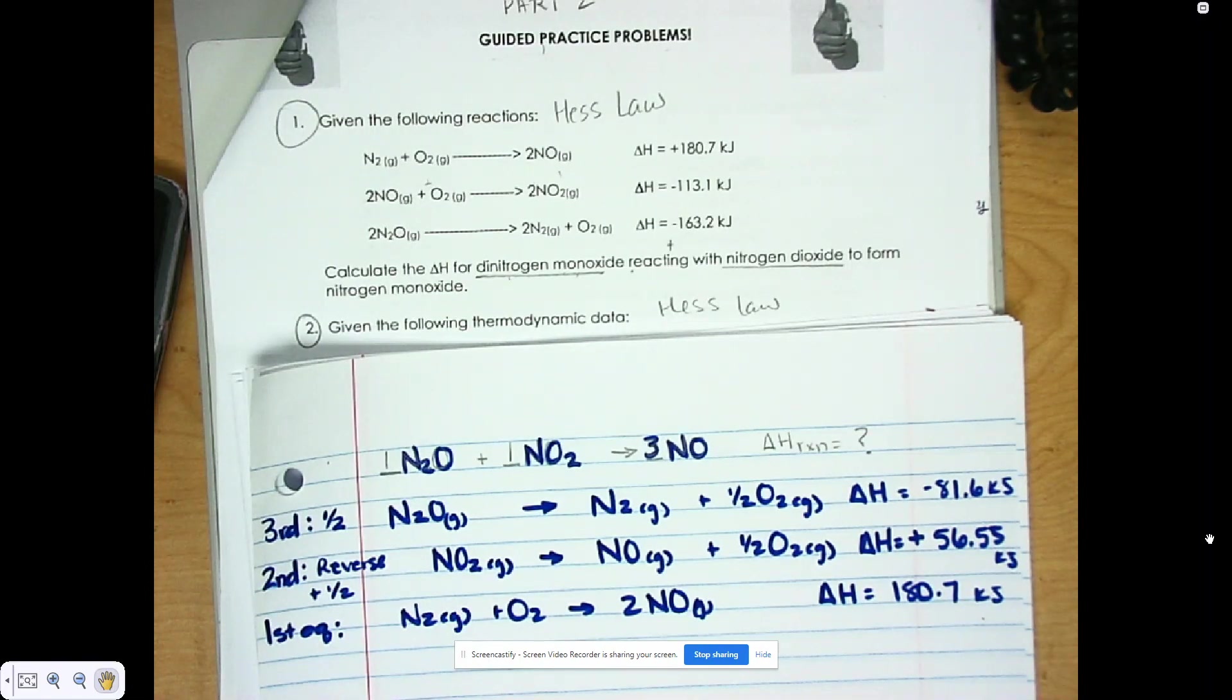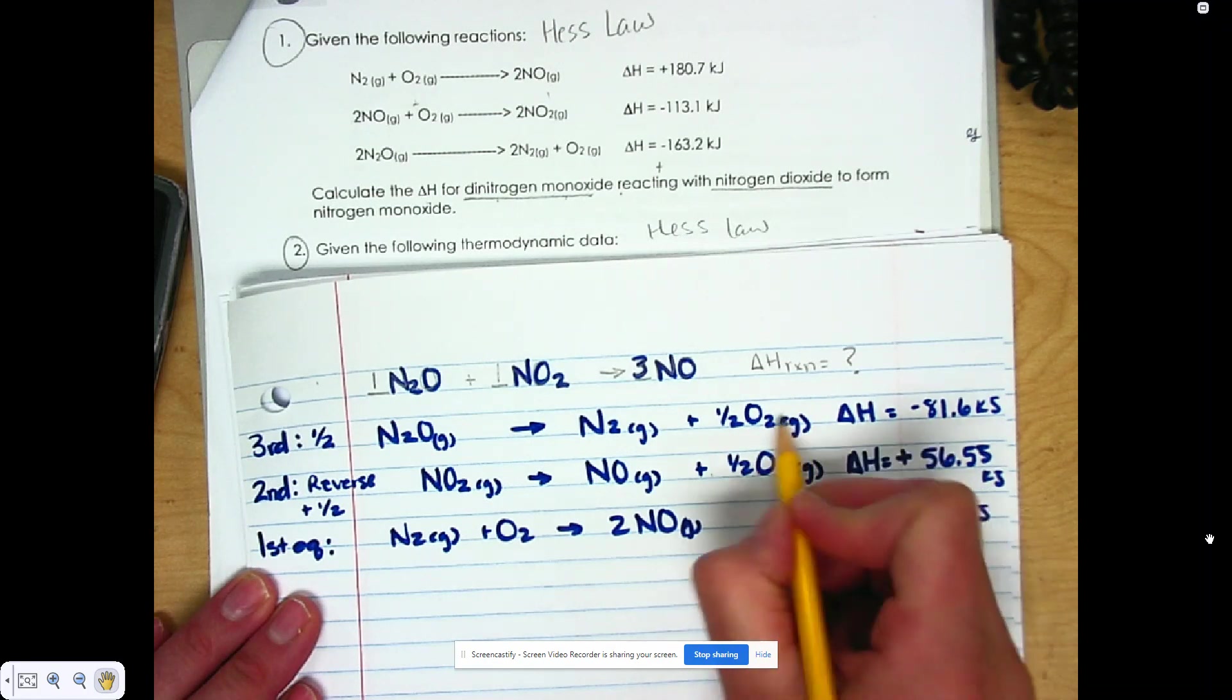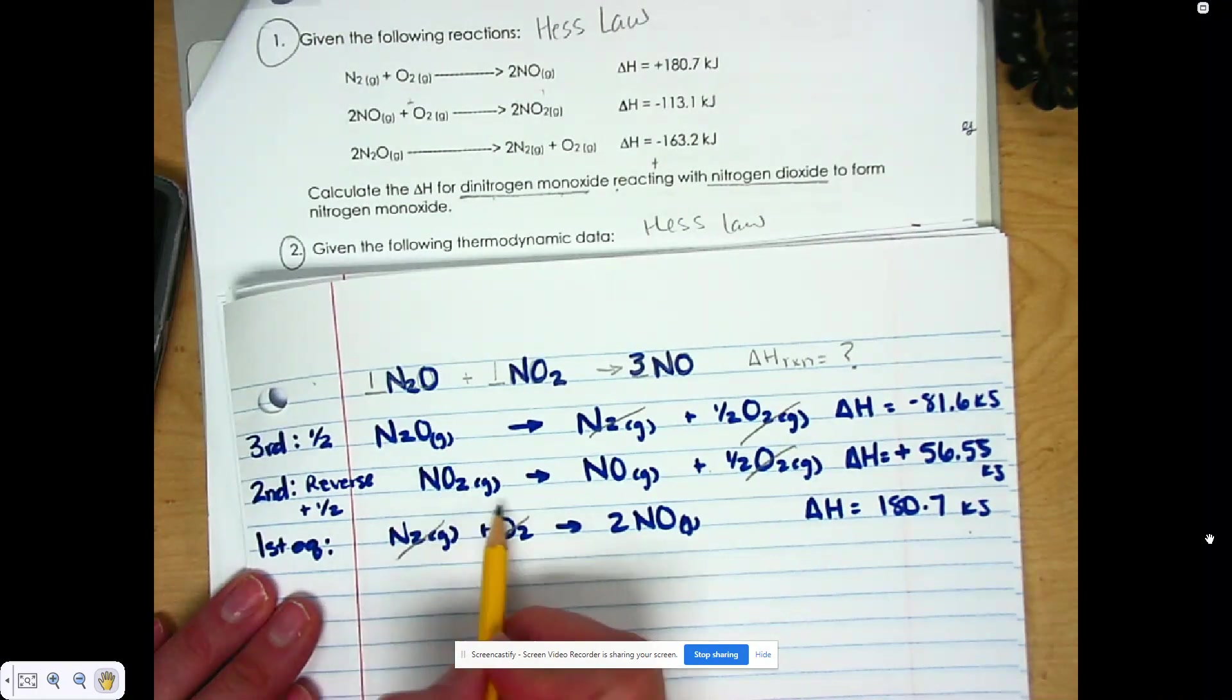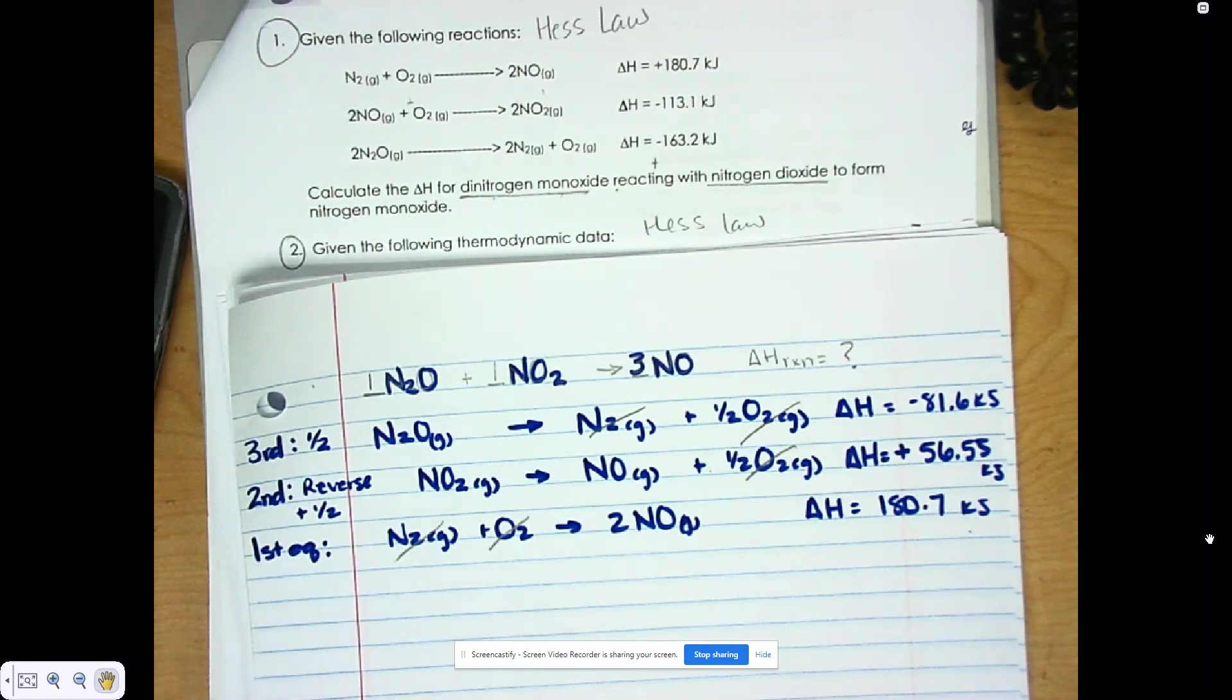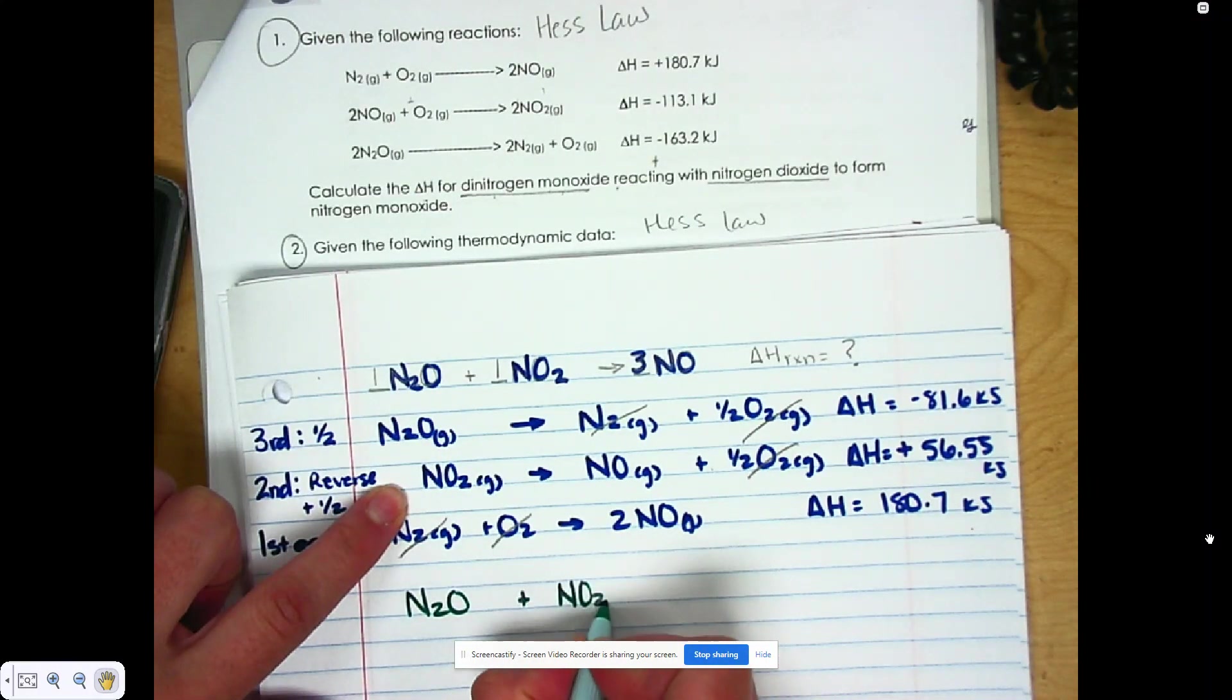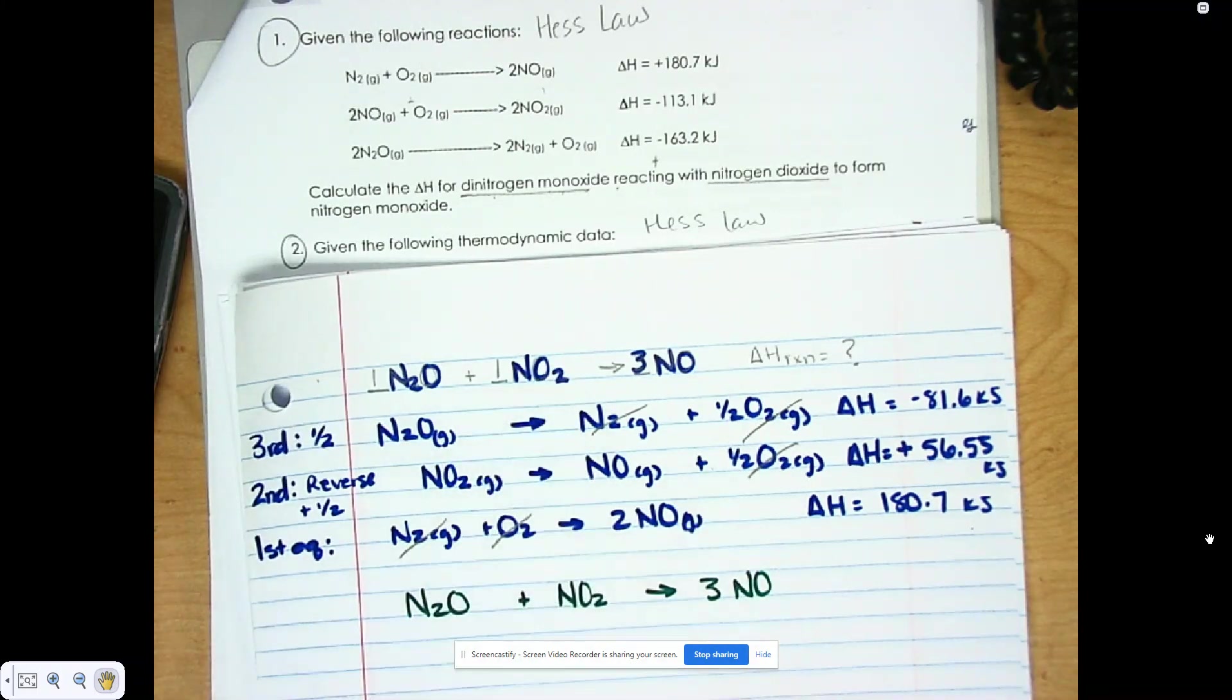Now that we have this, we're going to cross out like terms and create our equations. So one half plus one half is 1, and that cancels out with that one. This N2 cancels out with this N2. And nothing else cancels out, so we get to write our equation. And we end up with N2O plus NO2 gives us 2 and 1, 3 NOs. And that's exactly what we were looking for.